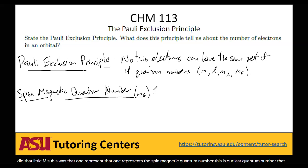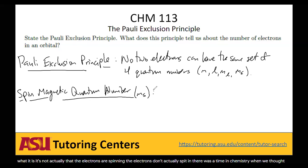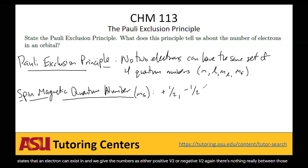M sub S is commonly just called the spin of an electron. It's kind of hard to exactly describe — the electrons don't actually spin. There was a time in chemistry when we thought electrons were spinning, but you can think of them that way. It essentially just means that within a given orbital there are two states an electron can exist in, and we give the values as either positive one-half or negative one-half.